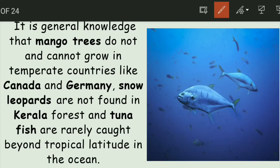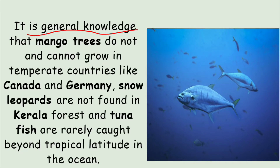It is general knowledge that mango trees cannot grow in temperate countries. Mango trees grow in tropical regions, so in temperate countries like Canada or Germany they cannot grow — that's why mangoes from India are exported there. Similarly, snow leopards will not be found in Kerala forests because of the heat; they are found in polar regions. Tuna fish are found in tropical latitudes in the ocean and rarely venture out.